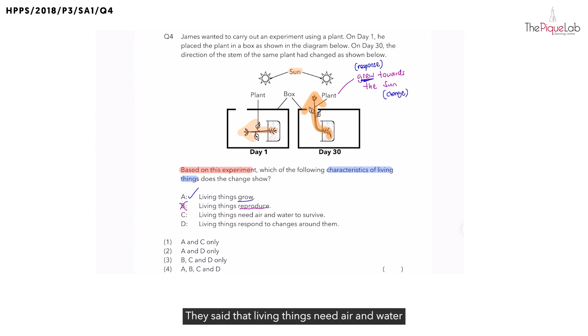Next, what about C? They said that living things need air and water in order to survive. Now, we all know this is true for all living things. But based on this experiment, did they give the plant water? No. So are we able to tell from this experiment that living things need air and water to survive? No. So this one, we can also cross out.